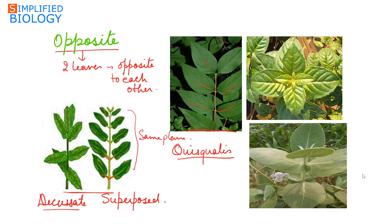In the case of opposite decussate, two leaves arise at a node. The leaves developing above lie at right angles to the first one. So these leaves are at right angles to the ones below, while those are at right angles to these. This can be seen in the case of Calotropis.